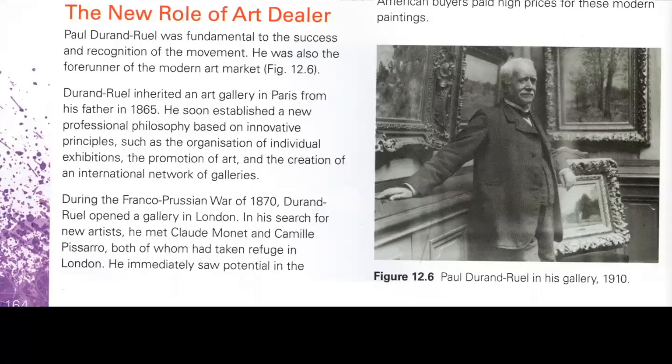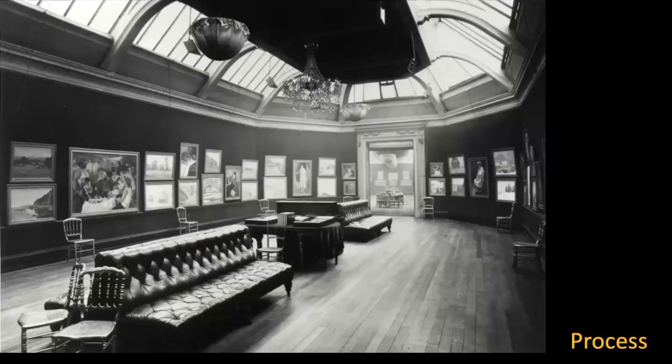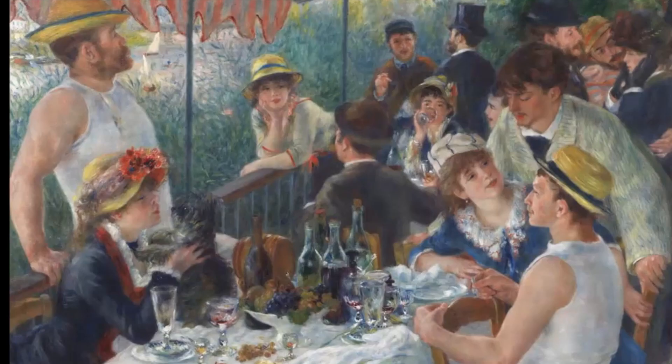One important person that can't be overlooked when talking about invention and innovation is Paul Durand-Ruel, who was fundamental to the success and recognition of the Impressionist movement and was really one of the forerunners of the modern art market as we know it today. He promoted the artists and created an international network of galleries. He was the one who took Impressionism to America, and the American artist Mary Cassatt played a significant role in making contacts for him there. American artists paid huge sums for these new modern works, setting the artists on their way.